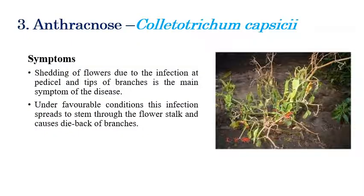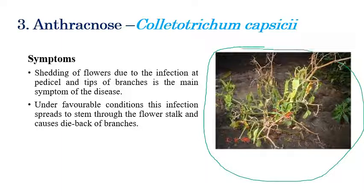The third disease is anthracnose, caused by Colletotrichum capsici. Coming to the symptoms on the plant: dieback of branches can be clearly seen, along with shedding of flowers — there is no fruit formation, or only a less amount of small fruits are formed with reduced fruit size. Infection spreads from tip to branches. Under favorable conditions, this infection will spread all over the plant from tip to stock, and the entire plant can look exactly like dieback symptoms.